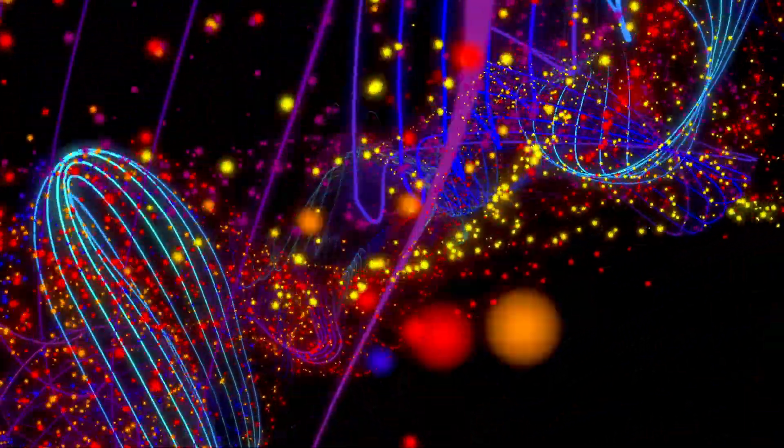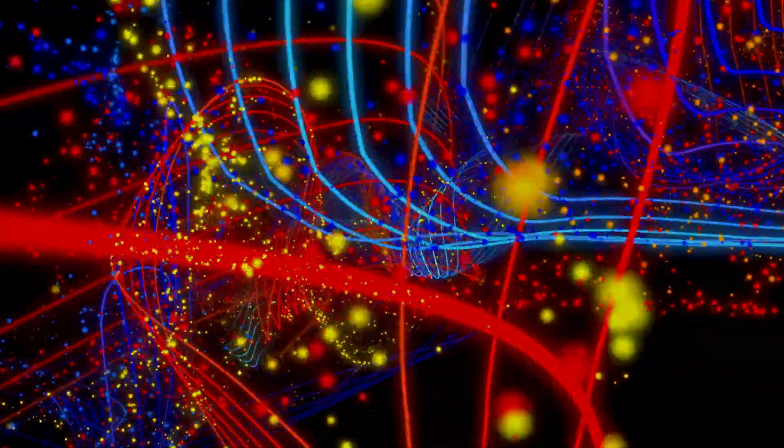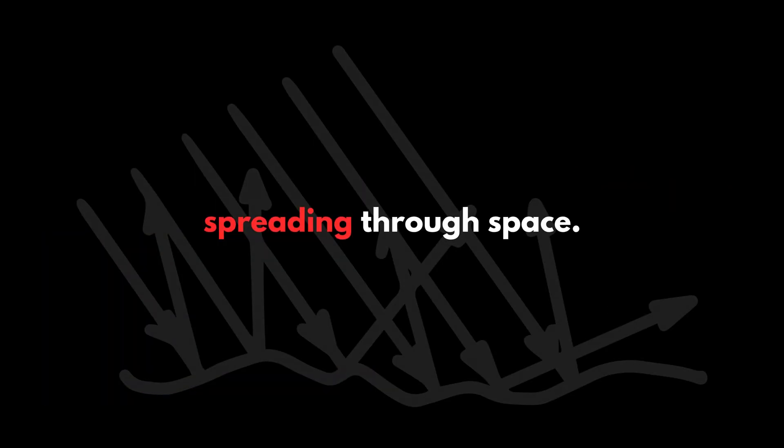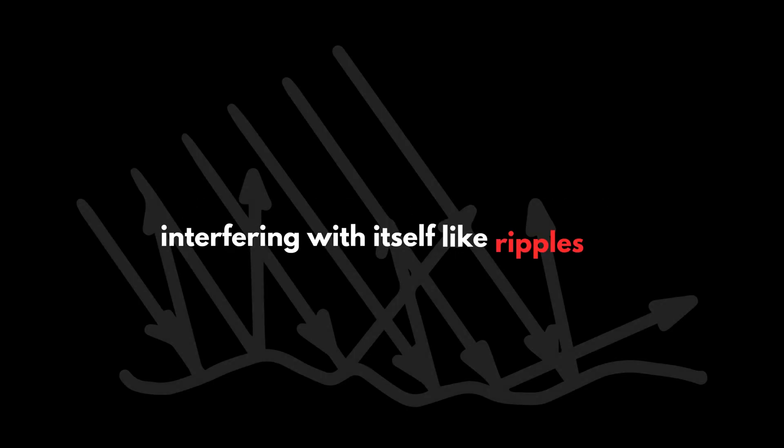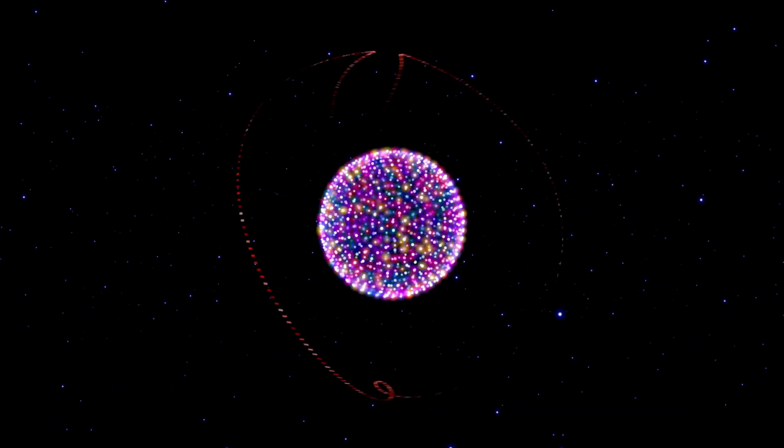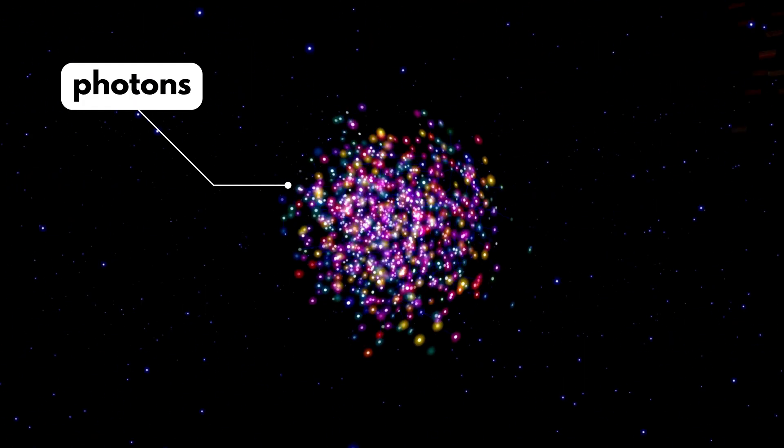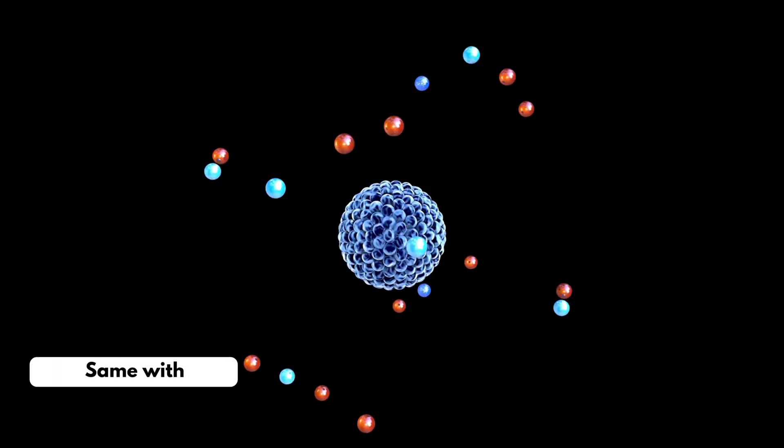In the quantum world, things aren't just one thing. They're two things at once. Light behaves like a wave spreading through space, bending around corners, interfering with itself like ripples on water. But look closer, and it's made of individual particles called photons. Same with electrons.